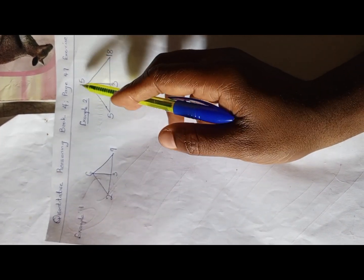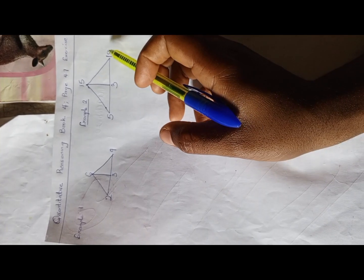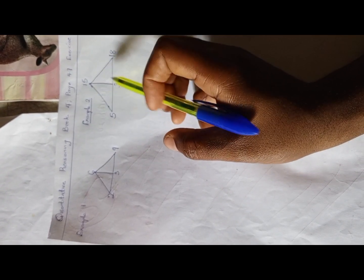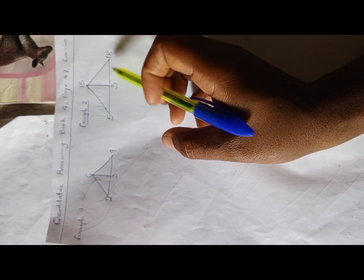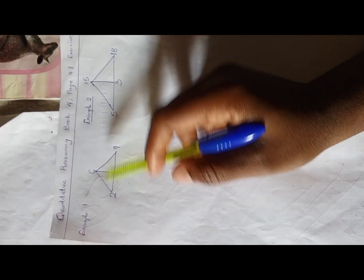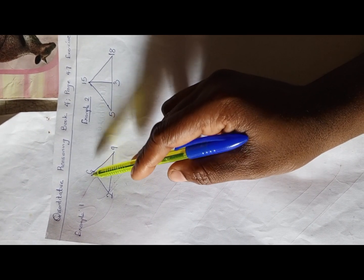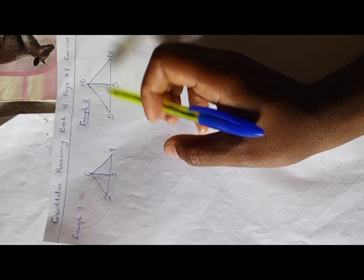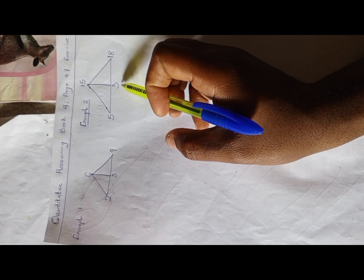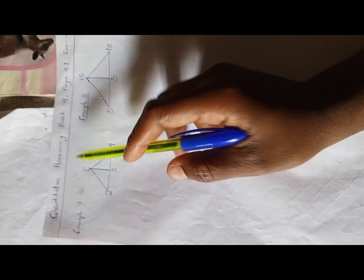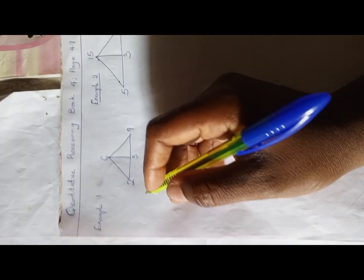So 18 minus 15 is 3, the same way 9 minus 6 is 3. Then 5 times 3 is 15, and 2 times 3 is 6. So this would work, and we can solve.